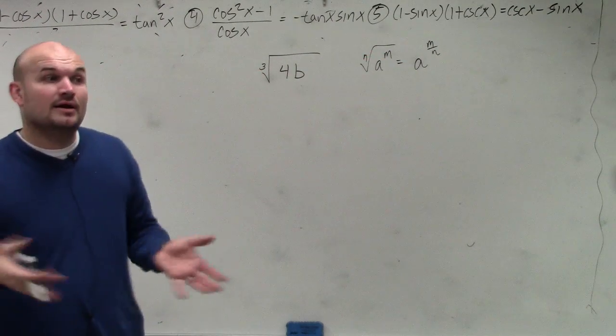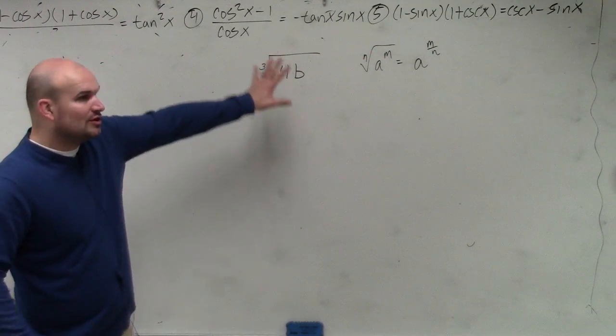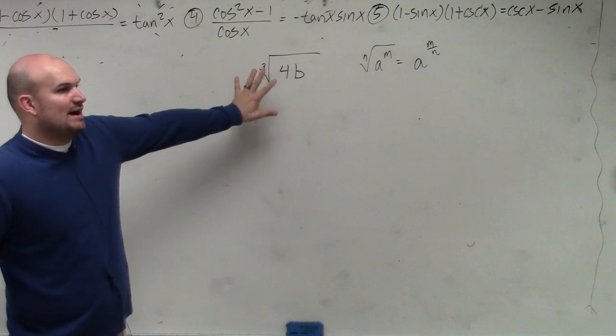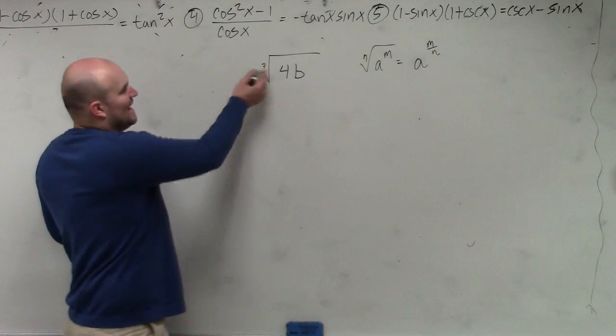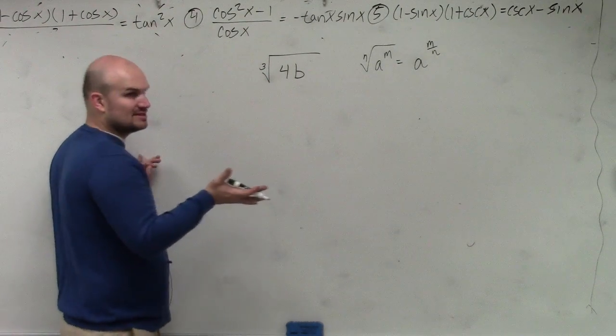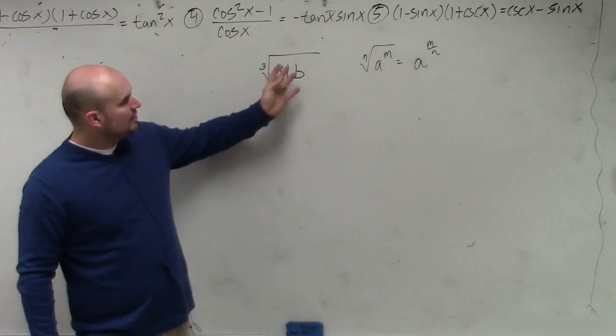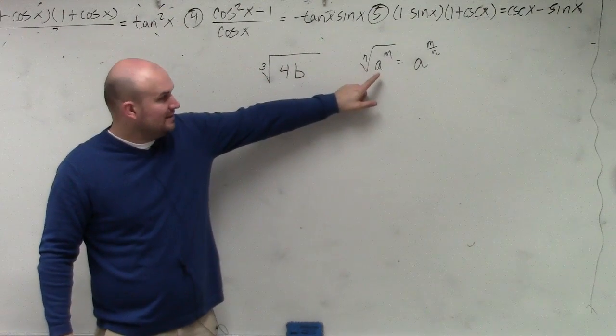It's written right there for you guys. All right, now all we've got to do is transfer that rule to this problem with now actually numbers. So we know n is equal to 3, right? That's obvious. The problem is we've got to figure out what is a and what is m.